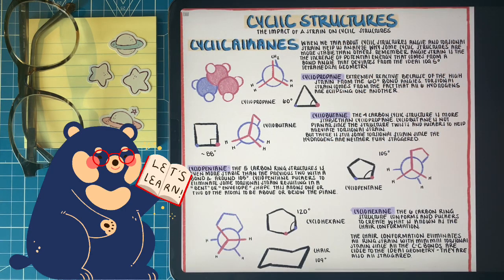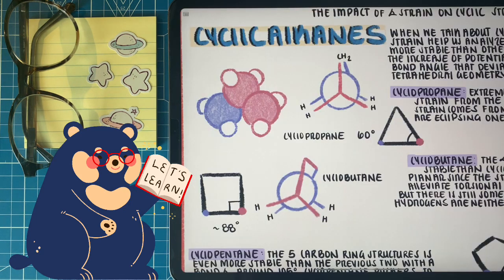Angle strain becomes really important when we start talking about the stability of cyclic alkanes. So let's talk about the first cyclic alkanes that we can possibly form, cyclopropane. We can't form any cyclic hydrocarbons less than three carbons.